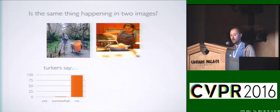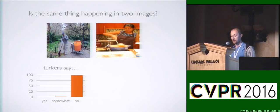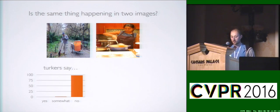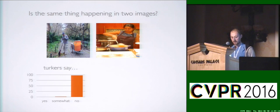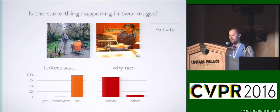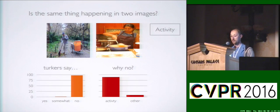To motivate why this representation makes sense, I did a small Turk study. I showed Turkers two sets of images and asked them, is the same thing happening in these images? Unsurprisingly, they said no, the same thing is not happening. They said the activity is different — in one case someone is sweeping, and in another case someone is spooning something out of some sort of dish.